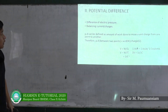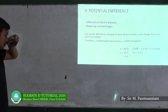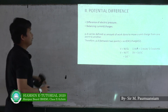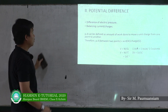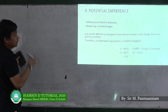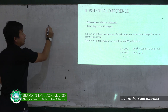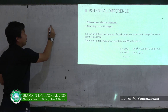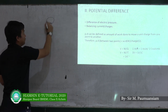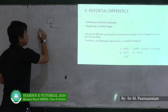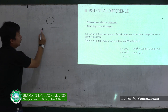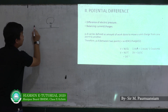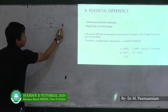Potential difference is a simple explanation of the difference of electric pressure. The electric current is driven by a potential difference. There may be a resistance or electric bulb in the circuit. The electric current can be positive or negative.